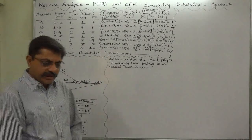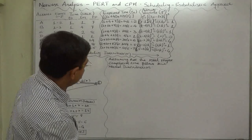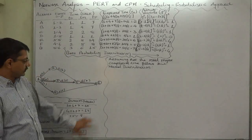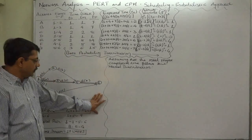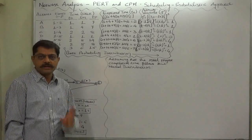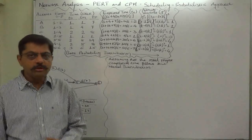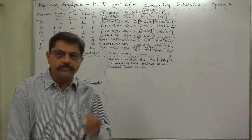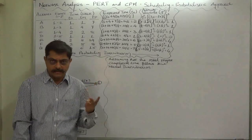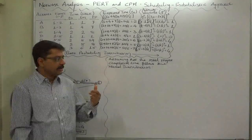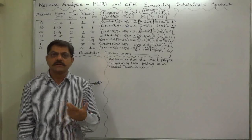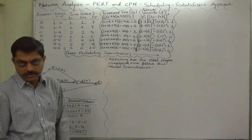To calculate the probabilities assuming normal distribution, we need to calculate the z-score, and to calculate the z-score, we need two important things: one is the mean time duration and the other is the standard deviation of the time duration.